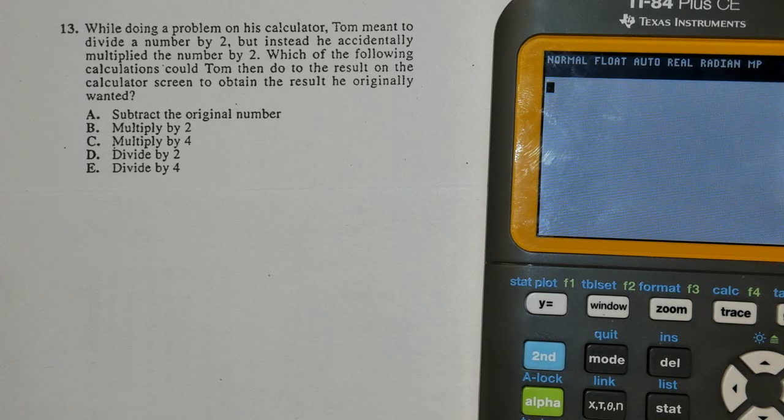While doing a problem on his calculator, Tom meant to divide a number by 2, but instead he accidentally multiplied the number by 2. Which of the following calculations could Tom then do to the result on the calculator screen to obtain the result he originally wanted?